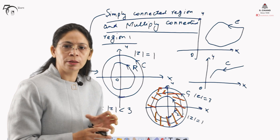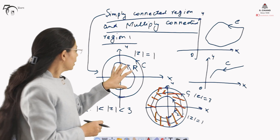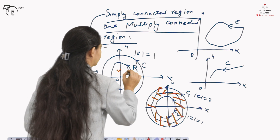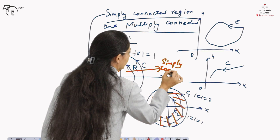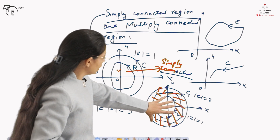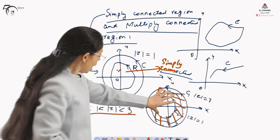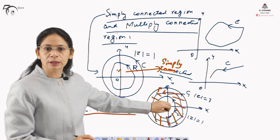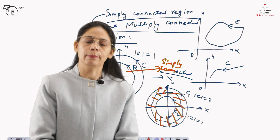To summarize: a region is called simply connected if any curve in it can be shrunk to a point without coming out of C — this is a simply connected region. For the annulus region, if we try to shrink a curve to a point, it is not possible without coming out of the region; therefore, this is called a multiply connected region.